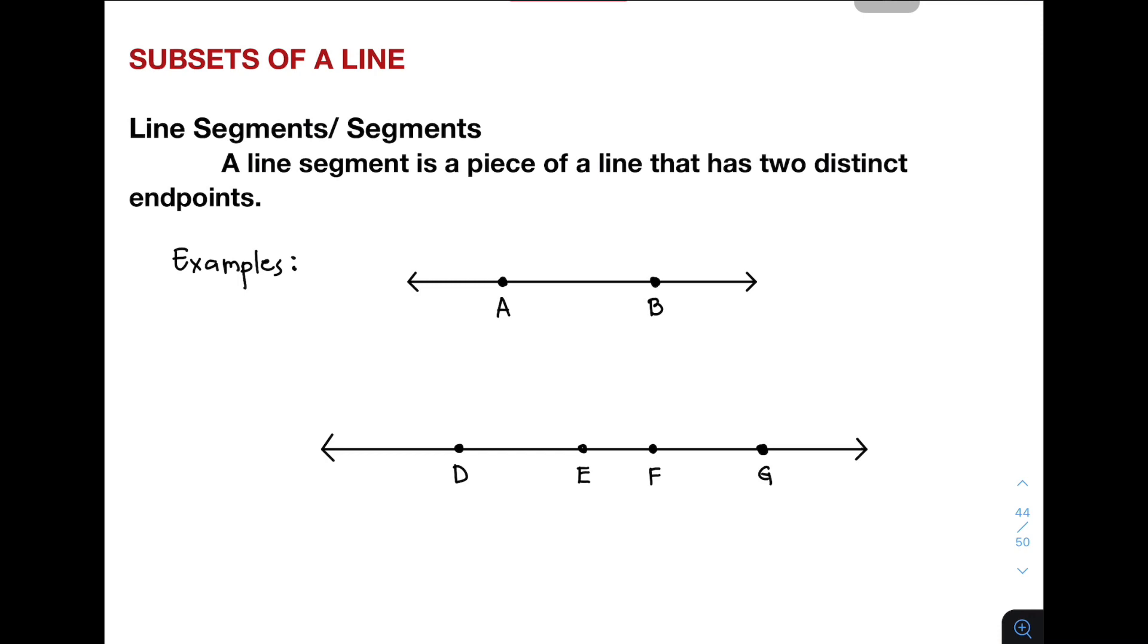A line segment is a piece of a line that has two distinct endpoints. For the first example, I have here line AB. Inside this line, we have a single subset. We have line AB and we have two points on line AB. The segment here is this part of the line starting from point A to point B.